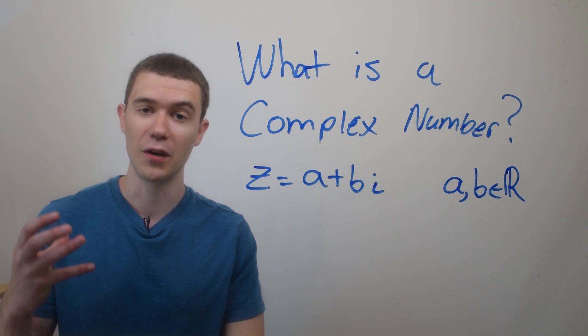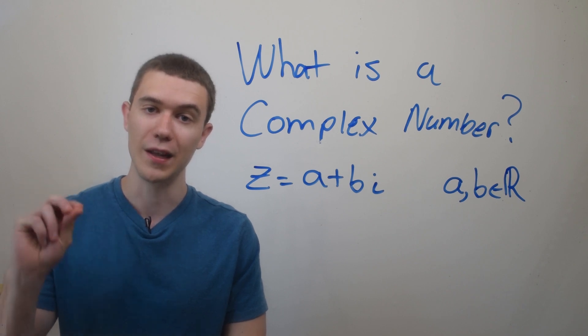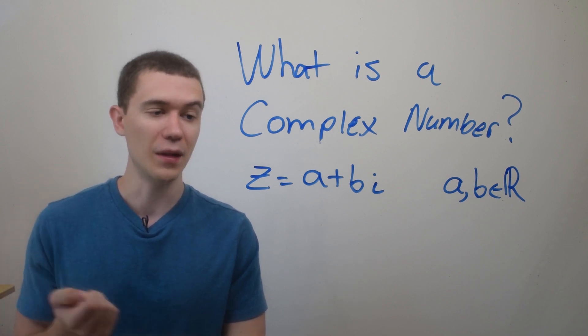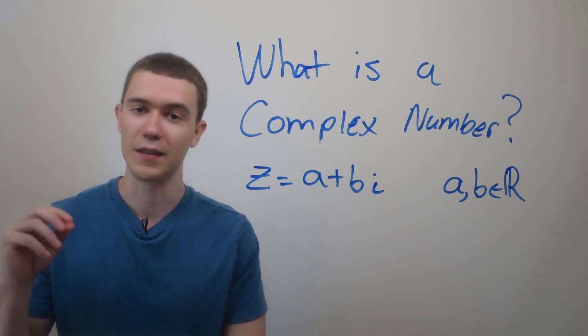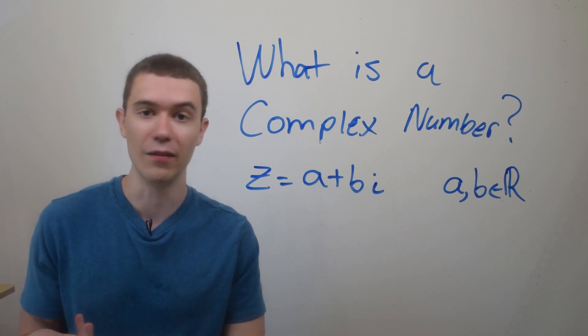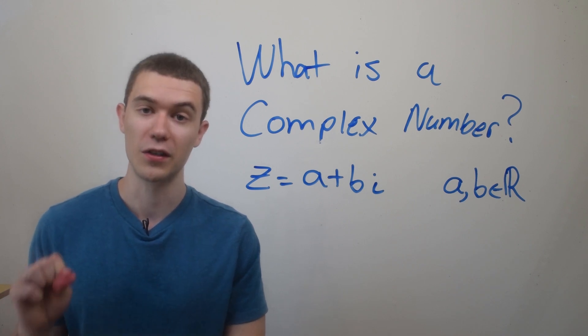Now I can talk about what a complex number is. A complex number has the form z equals a plus bi, where we usually use the letter z. a and b are real numbers like 5, 6, 7.2, pi, or negative 11 thirds, and i is that imaginary unit we just talked about.